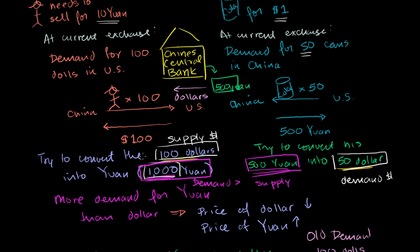So there's demand for 1,000 yuan. Before the Chinese central bank got involved, there was only 500 yuan supply. But now the Chinese central bank says, there's demand for 1,000 yuan, there's only 500 yuan supply. We're going to produce another 500 yuan. We literally can just print it, and then they will convert what they printed into dollars. So just like that, you now have a balance of supply and demand.